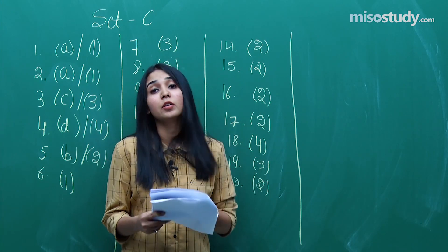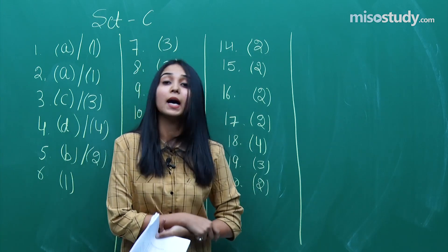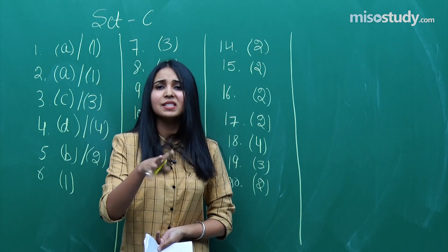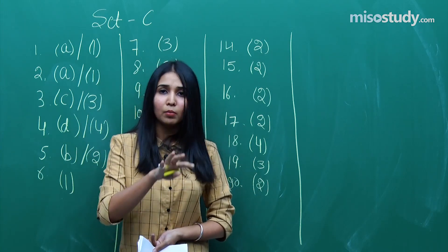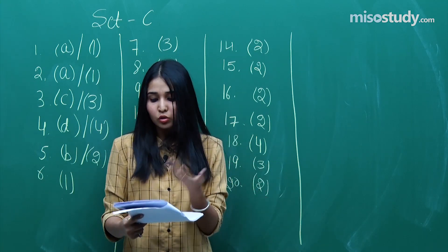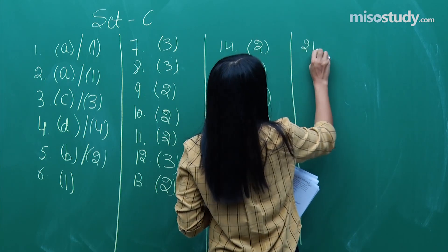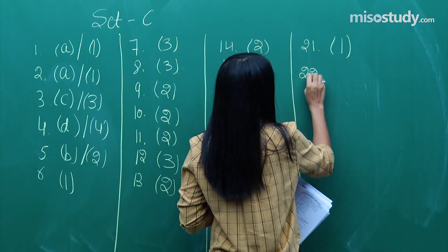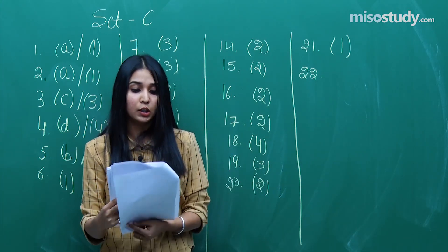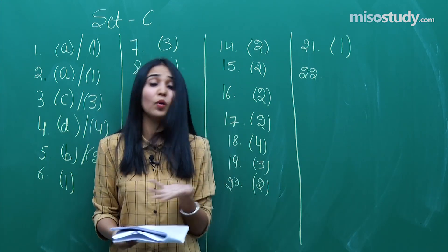Question number 21 was from coordination chemistry, specifically from the isomerism section — a concept-based question. You don't need to go deep into the theory for this one. The correct option for question 21 is option 1.